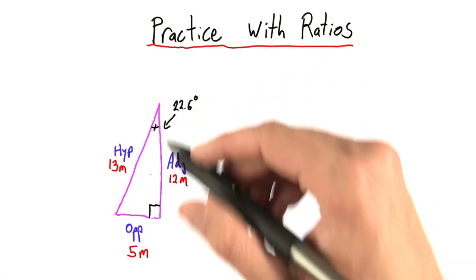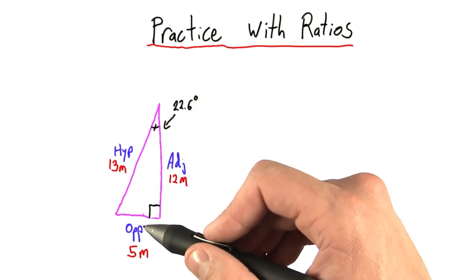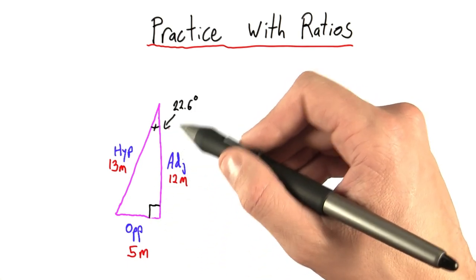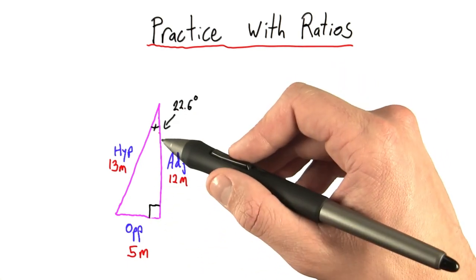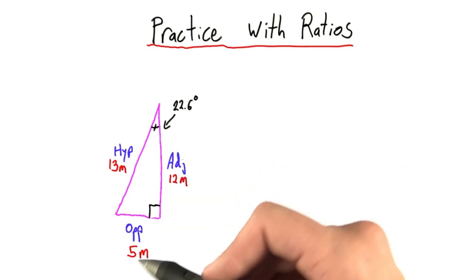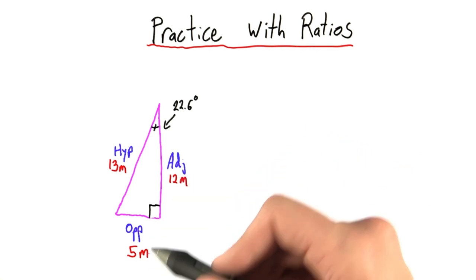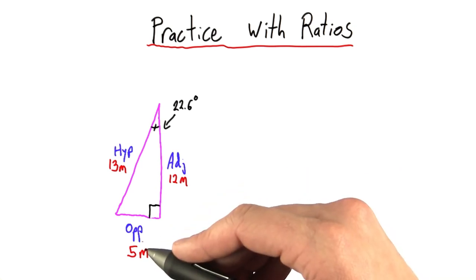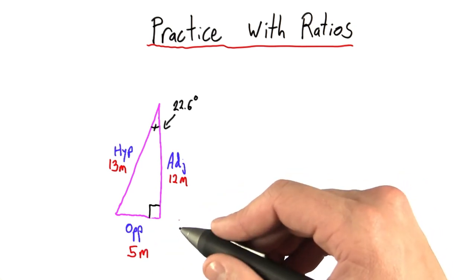What we now know is that any time we have a similar triangle to this one, so a right triangle with an angle of 22.6 degrees here, the ratio of opposite to adjacent will always be 5 over 12. This ratio is so important that we're going to give it its own name.